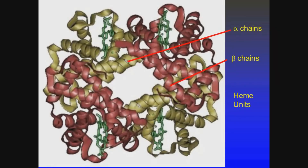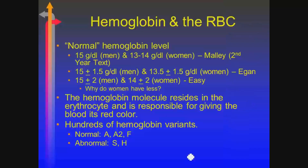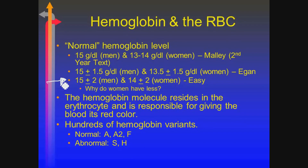Here's my alpha chain, my beta chain, my heme units, and the iron that it binds to. Normal hemoglobin levels — we'll go with the easy way: 14 plus or minus two for women, 15 plus or minus two for men. Hemoglobin resides in the erythrocyte, gives it the red color, and there are a lot of variants. One we'll talk about next semester is hemoglobin F — fetal hemoglobin — because it's a totally different structure than adult hemoglobin. But there's a bunch of different variants.